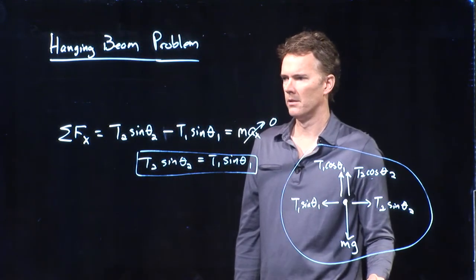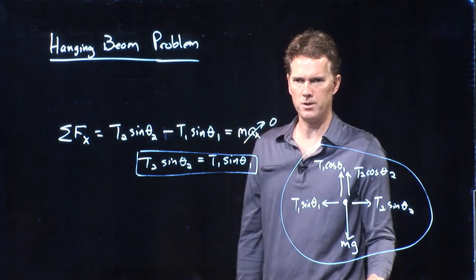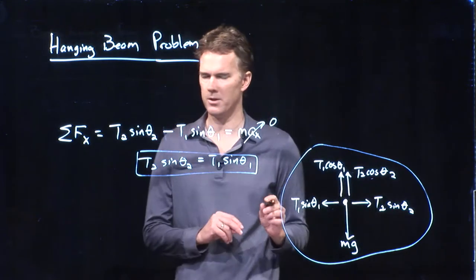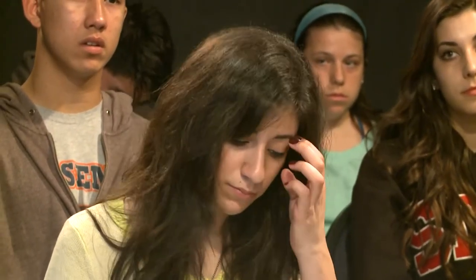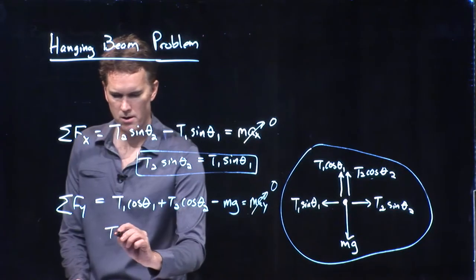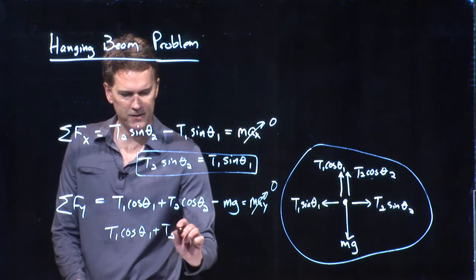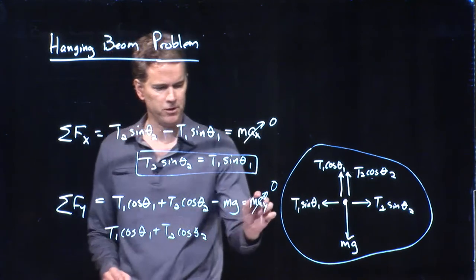What should I do next? Yesenia, you had a thought — put the forces in the y-direction. Forces in the y-direction: T1 cosine theta-1 plus T2 cosine theta-2 minus mg equals mass times the acceleration in the y-direction. And the acceleration in the y-direction is zero also. So we have: T1 cosine theta-1 plus T2 cosine theta-2 equals mg.